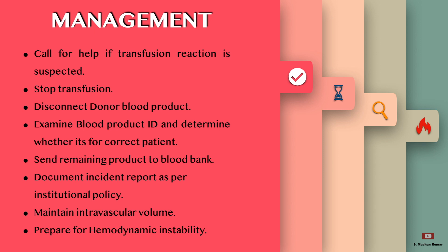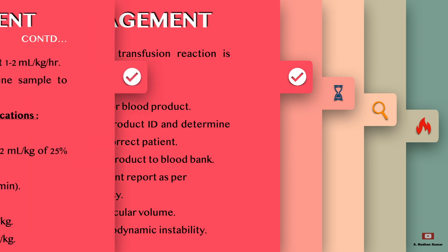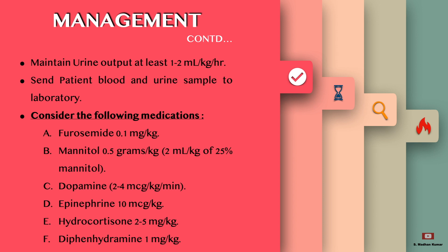Maintain intravascular volume. Prepare for hemodynamic instability. Maintain urine output at least 1-2 ml per kg per hour. Send patient blood and urine samples to the laboratory. Consider the following medications: Furosemide 0.1 mg per kg, Mannitol 0.5 grams per kg, Dopamine 2-4 micrograms per kg, Epinephrine 10 micrograms per kg, Hydrocortisone 2-5 mg per kg, Diphenhydramine 1 mg per kg.